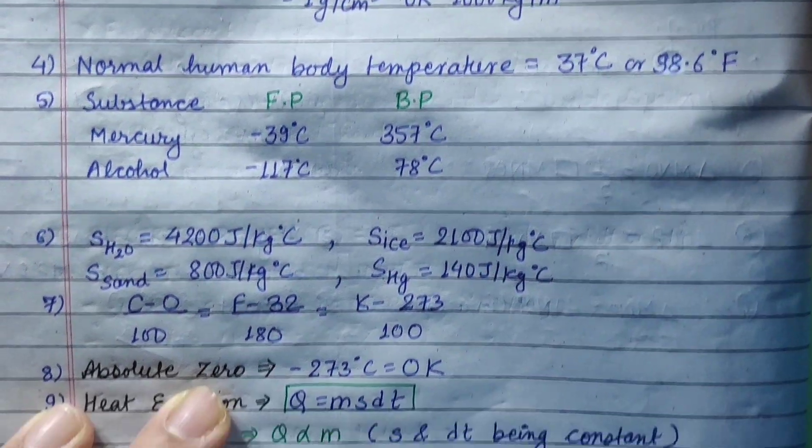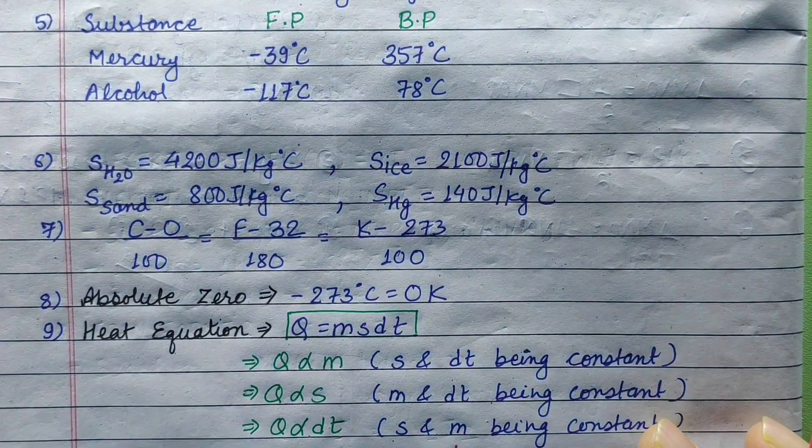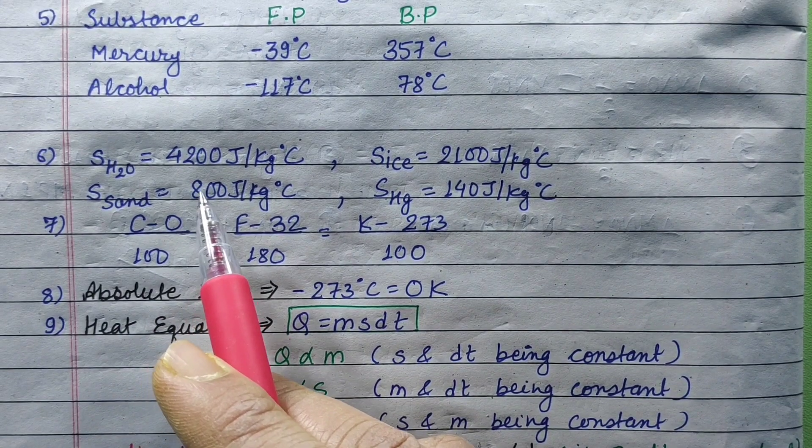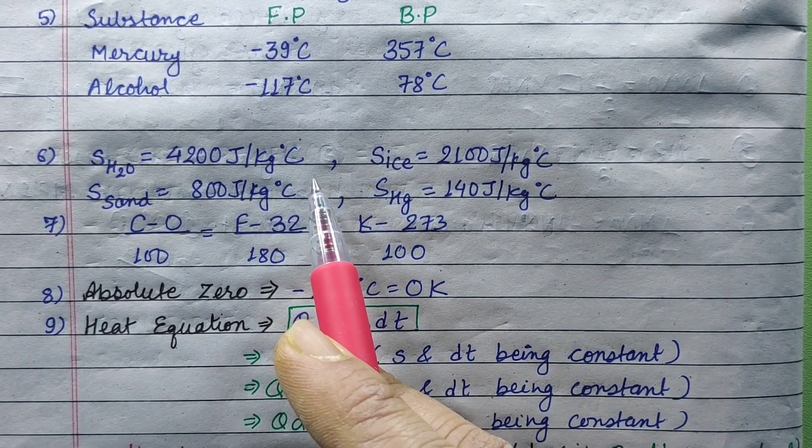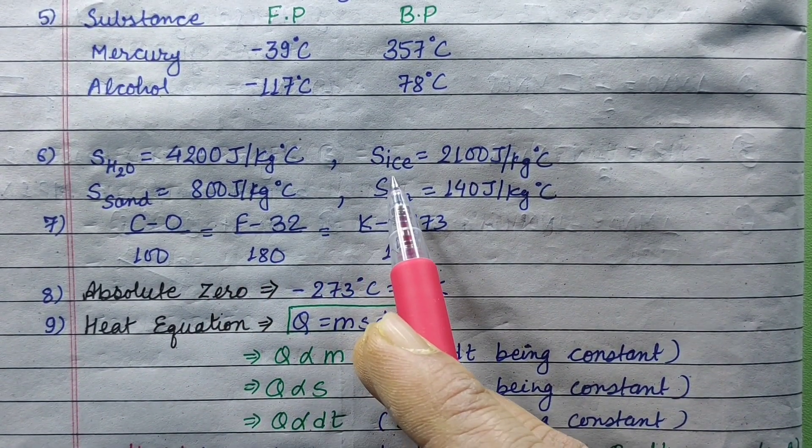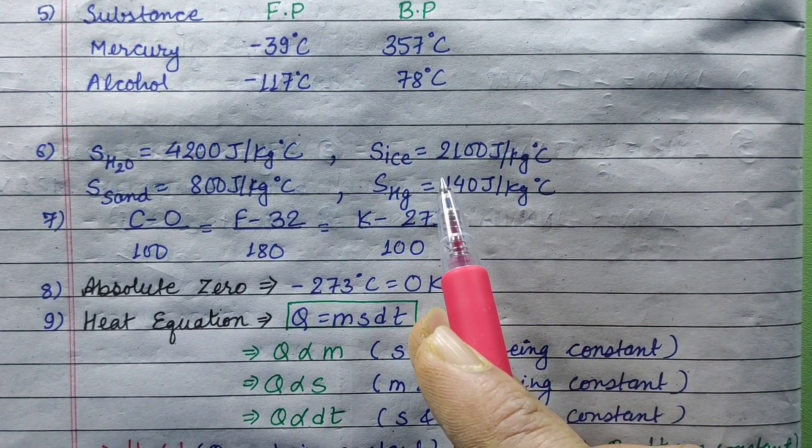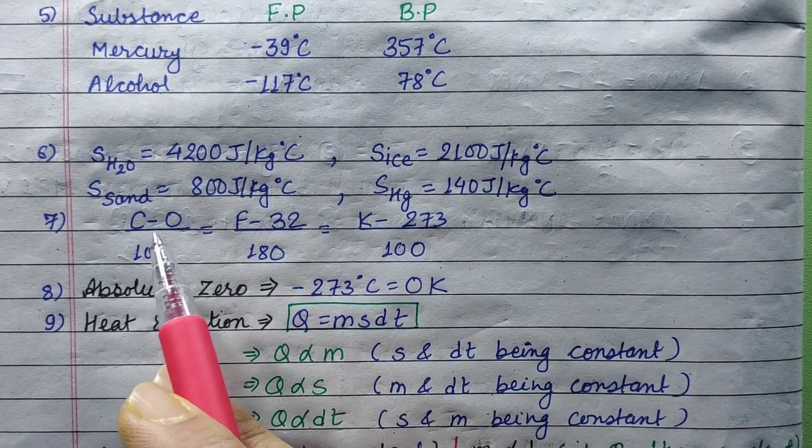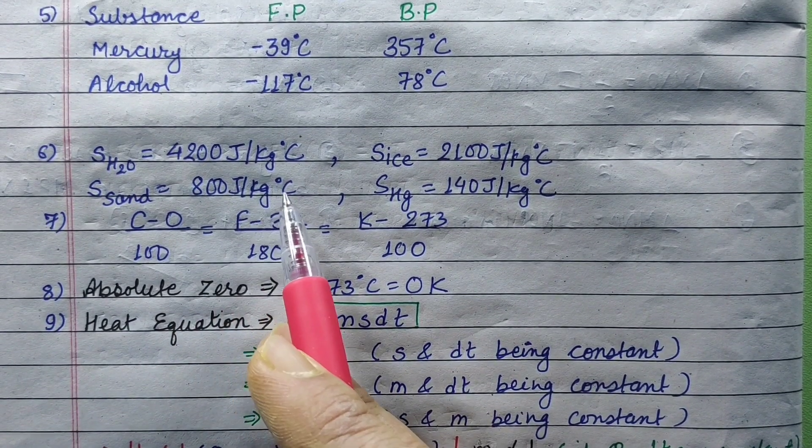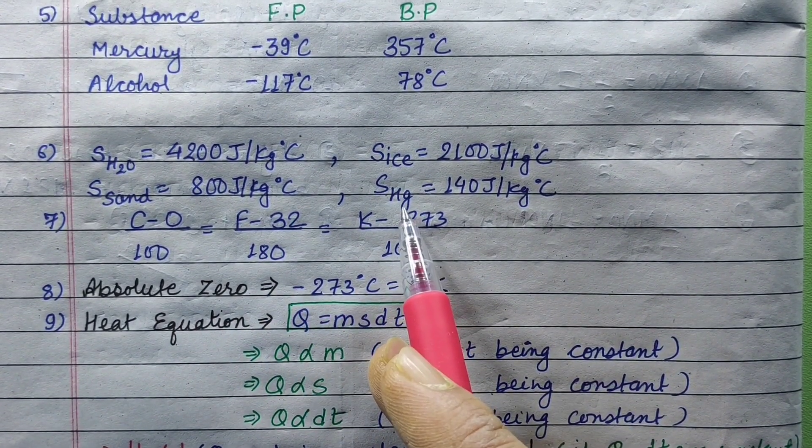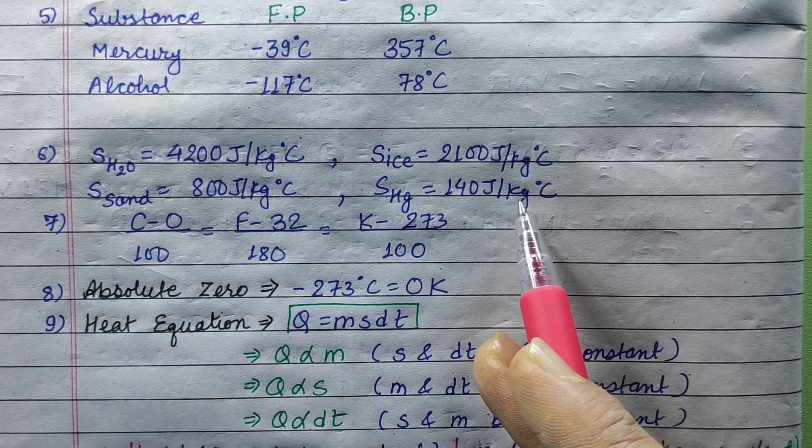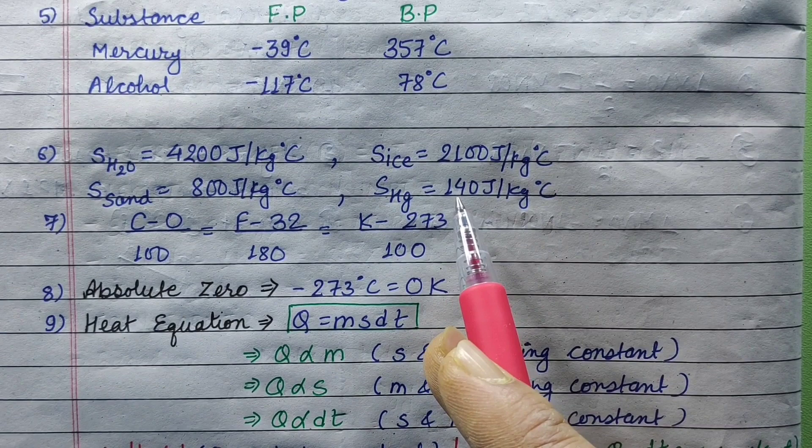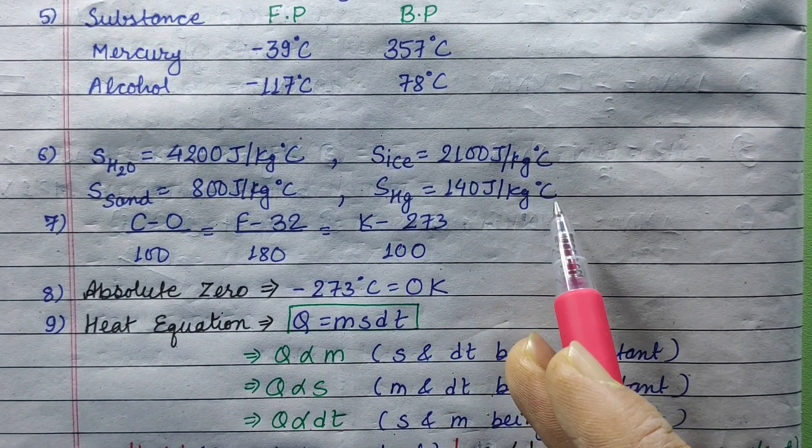Specific heat capacity of water is 4200 joule per kg per Celsius. Ice is 2100 joule per kg per Celsius. Sand is 800 joule per kg per Celsius. Mercury is 140 joule per kg per Celsius.